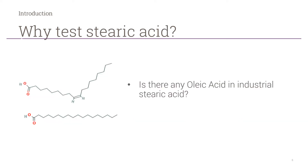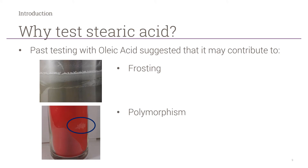Most importantly, I wanted to understand if stearic acid contained any oleic acid. On the top left is the structure for oleic acid, and the structure for stearic acid is directly below it. Both are composed of 18 carbons, but oleic acid has a double bond at carbon 9, making it a monounsaturated fatty acid. I'm concerned about potential oleic acid content because past testing I've performed has indicated that oleic acid might contribute to two defects commonly seen in candles.